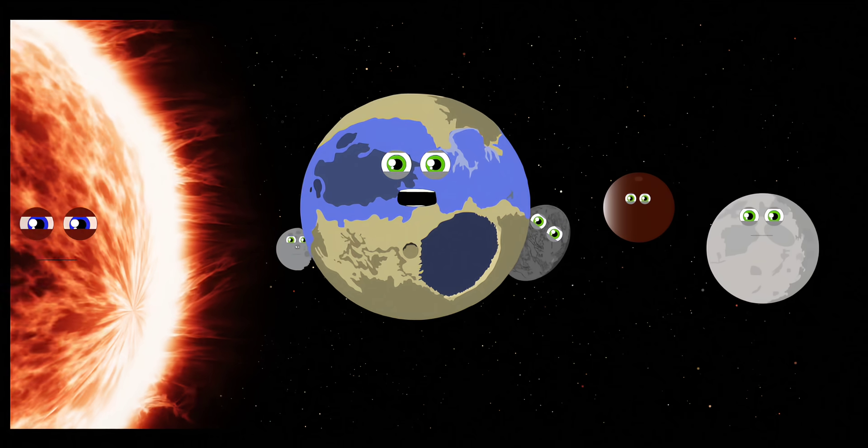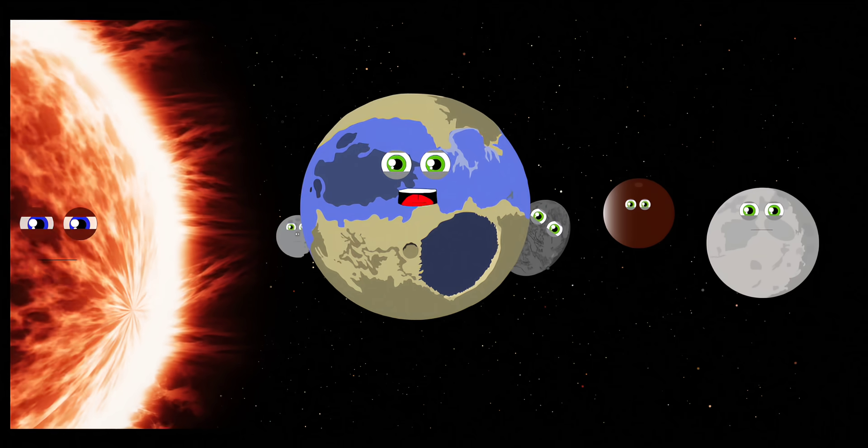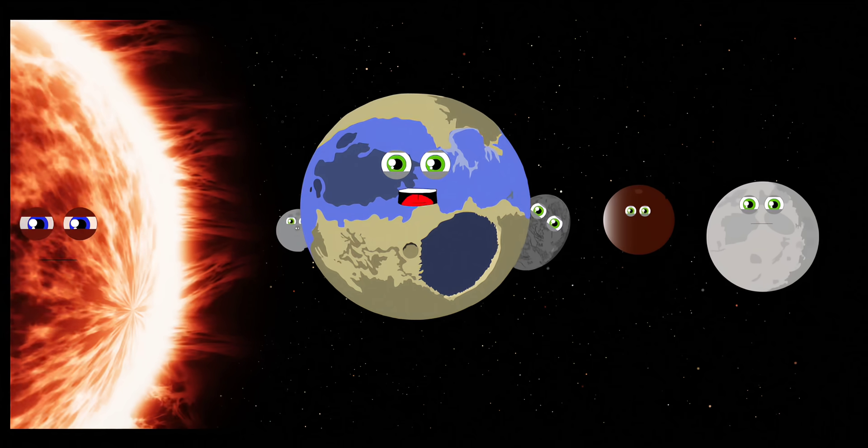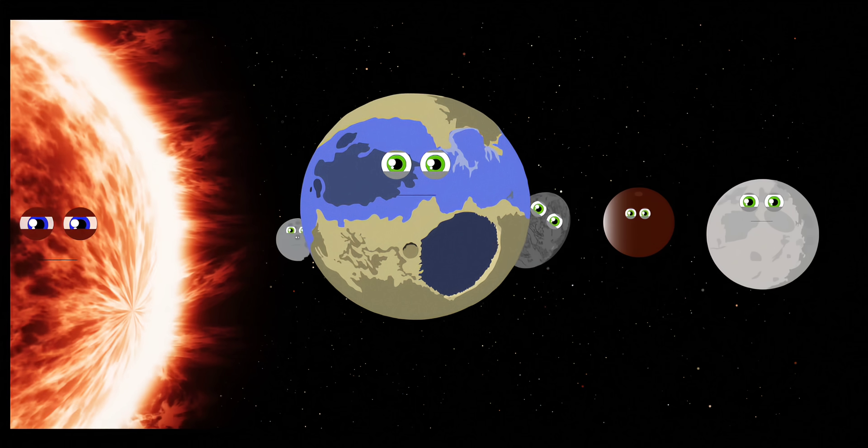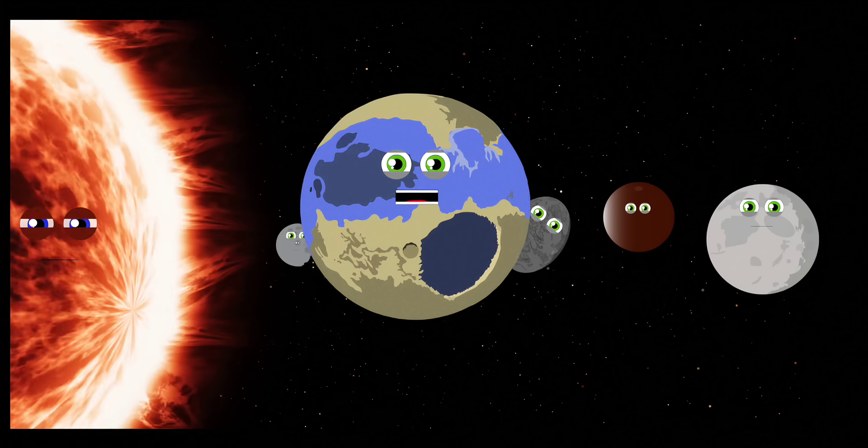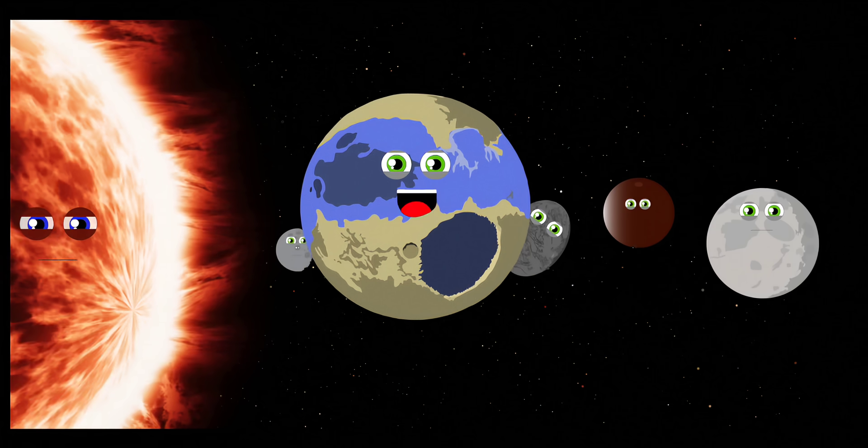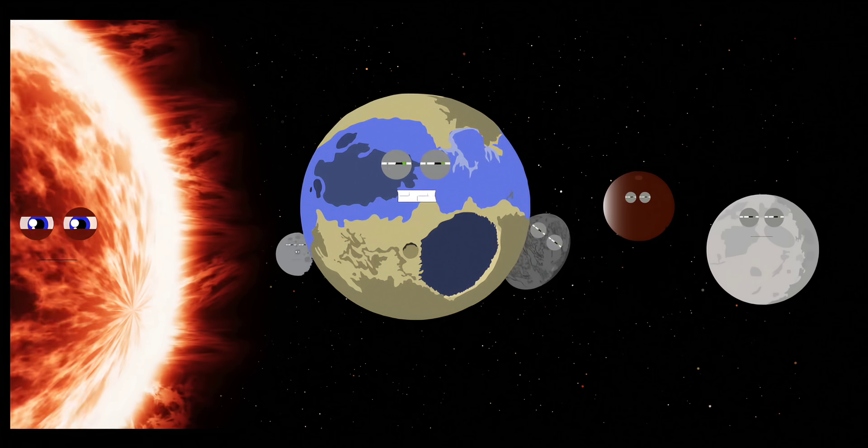My name is Pluto. I'm a dwarf planet and was the ninth planet from the sun. I am one-third water in the form of ice and have five moons that are lots of fun.